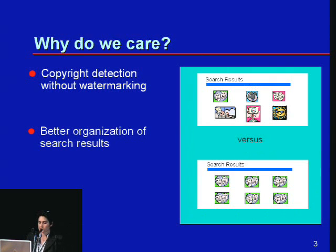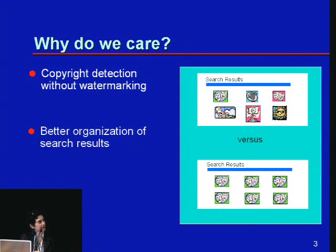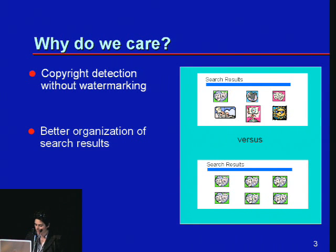Another situation is better organization of search results. When you do a search, there are a lot of results that look almost identical. Instead of cluttering the first page with identical things, you want to show different things so the user can pick and choose. Once you click, you realize the different versions of that video are at different spatial, temporal, and bit rate resolutions sitting somewhere.